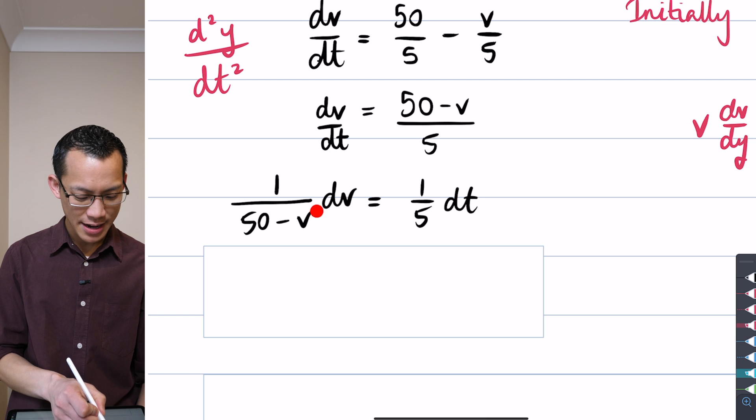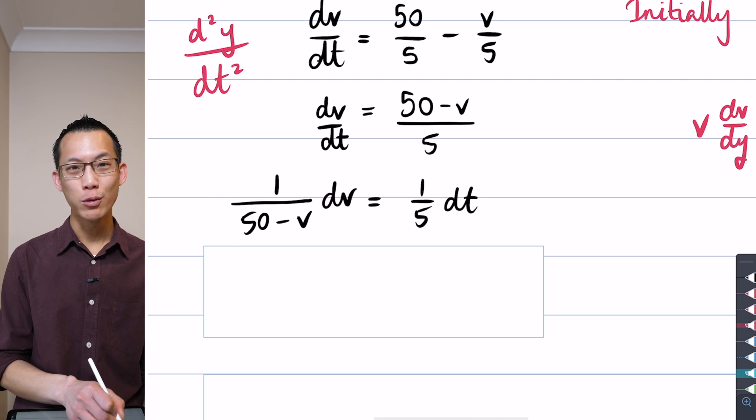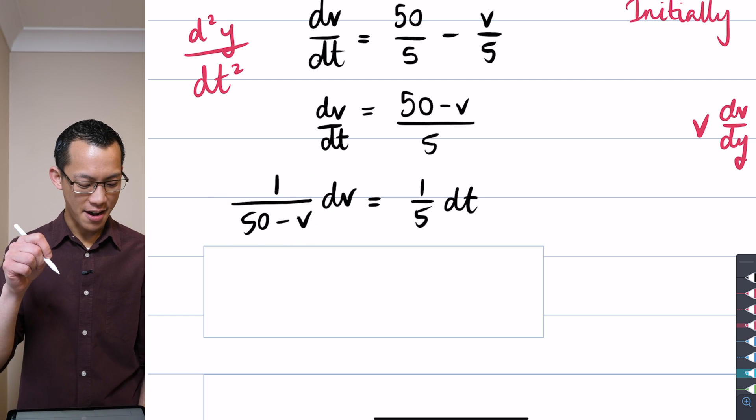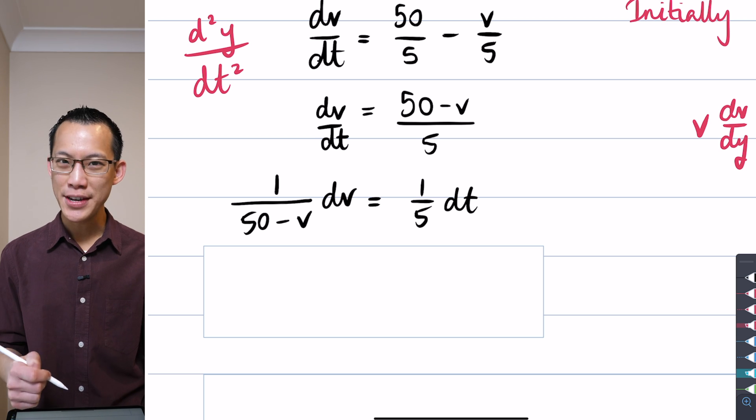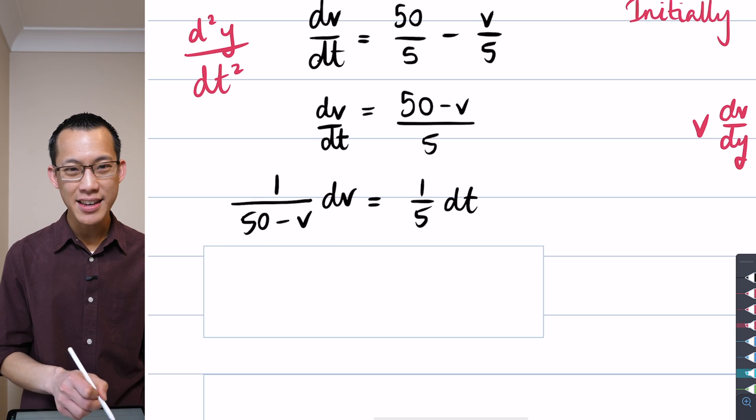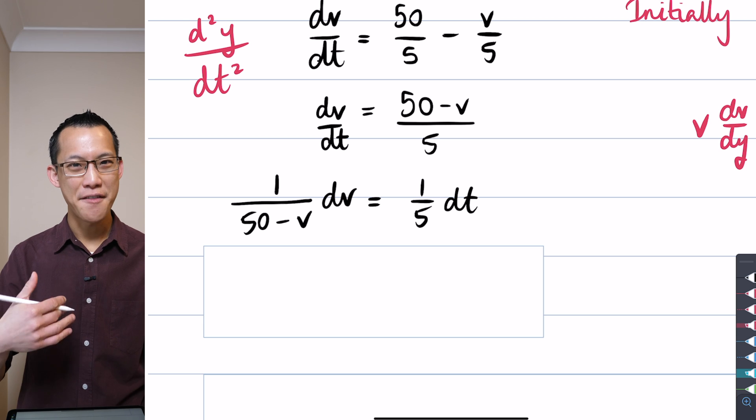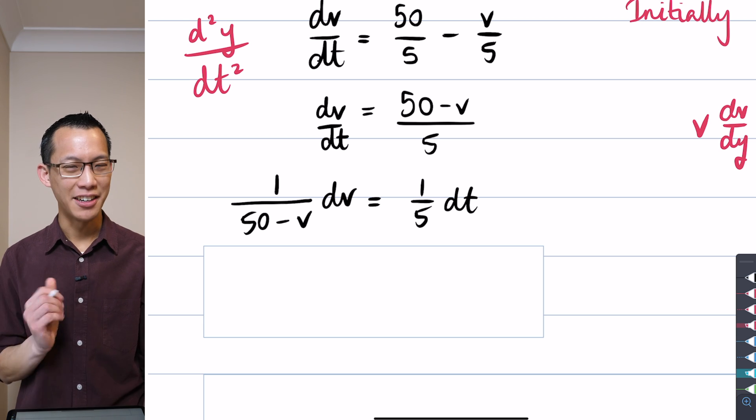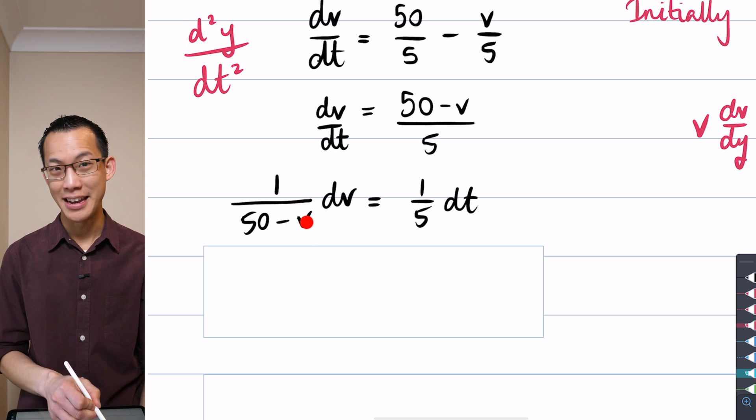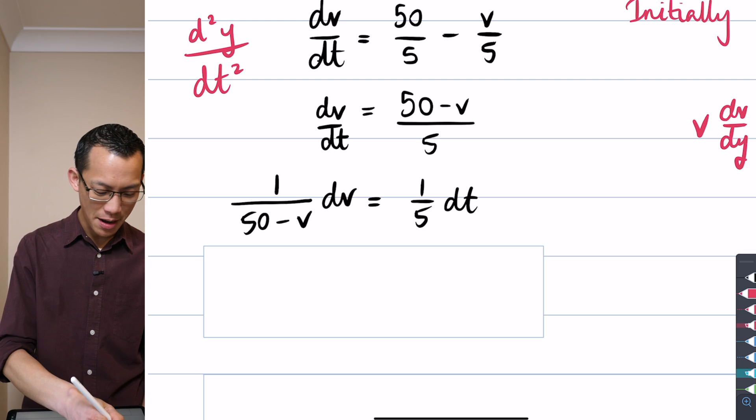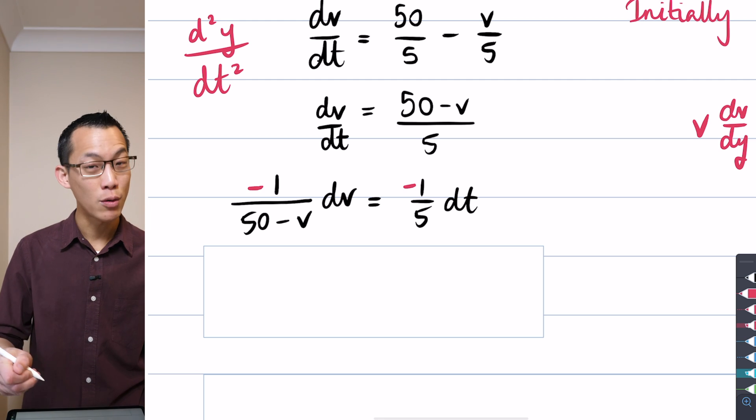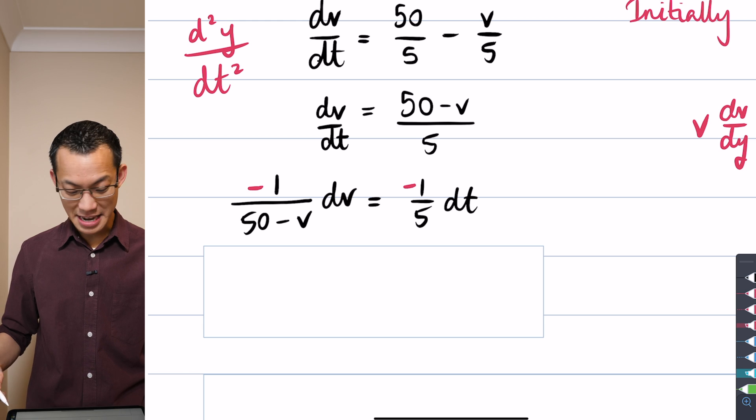Over here on the left-hand side, you've got something that looks an awful lot like a F dash on F situation, but if 50 minus V is my F, then F dash should be negative 1, right? Because I get that from the negative V. So therefore, to fix that up, I'm going to multiply both sides by negative 1, like so, and now I'm good to go.